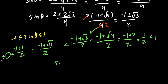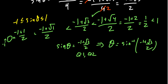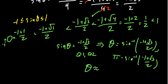For sin(θ) = (−1 + √3)/2, this is a positive value, so we look in the first and second quadrants. Consulting a calculator, θ = sin⁻¹((−1 + √3)/2) ≈ 0.37 radians. The second solution is π − sin⁻¹((−1 + √3)/2) ≈ 2.77 radians. If you want exact answers, those are sin⁻¹((−1 + √3)/2) and π − sin⁻¹((−1 + √3)/2), and rounding to two decimal places gives approximately 0.37 and 2.77.